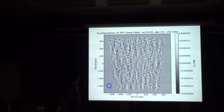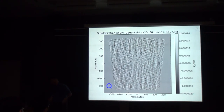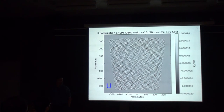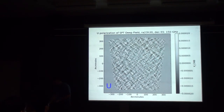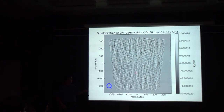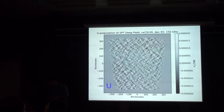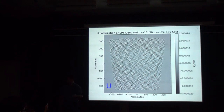Looking at the Q and U maps, you can see the structure in the Q map tends to be either up-and-down or side-to-side, while in the U map the structure tends to be along the diagonals. Why does the microwave background have this frame-orientation dependence? It turns out these patterns are known as E-modes and B-modes. The temperature field is just a Gaussian random field — splotchiness all over the place. But the polarization has this systematic orientation dependence.